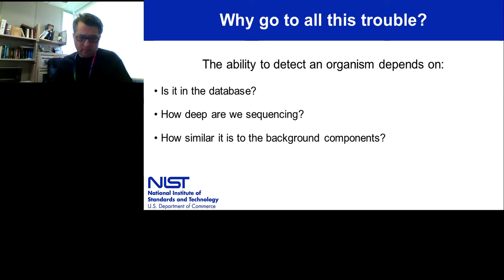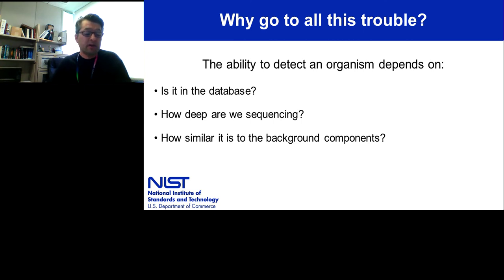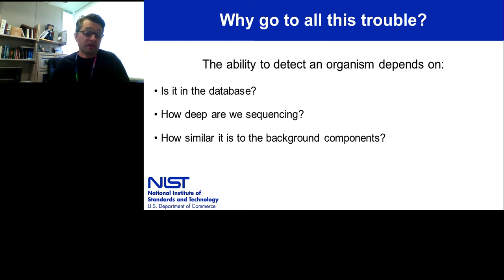Third: how similar is the DNA you're looking for to the rest of the DNA that's present? This is a difficult and sometimes unknown part of the detection challenge. In some clinical cases, it may be relatively straightforward if you're looking for what amounts to a monoclonal pathogen within a human DNA background. However, polymicrobial infections with antimicrobial resistance strains are a serious concern, and they really confound many traditional culture-based and even some new molecular-based techniques.